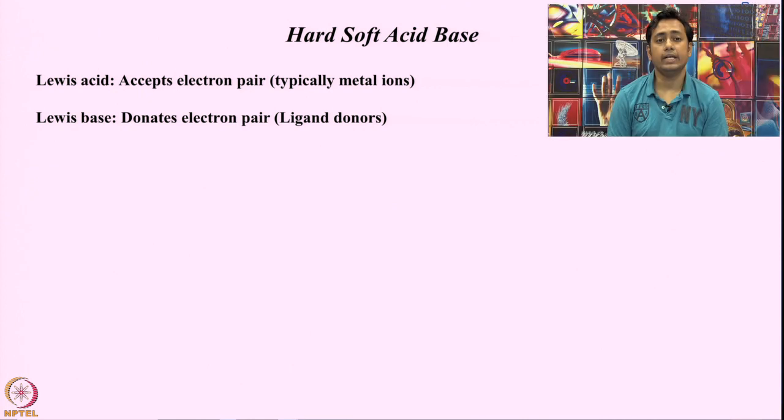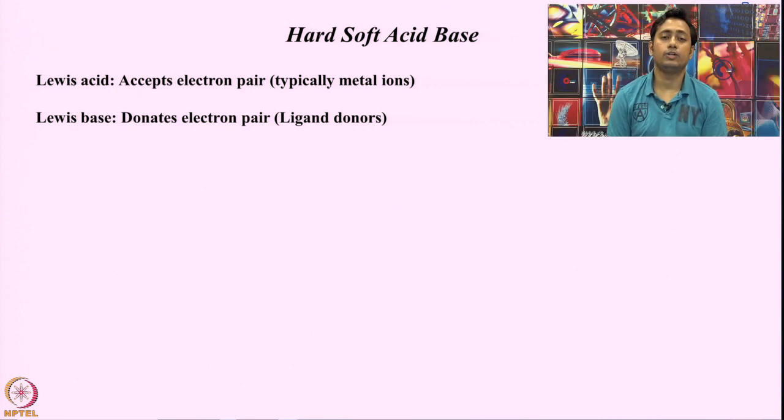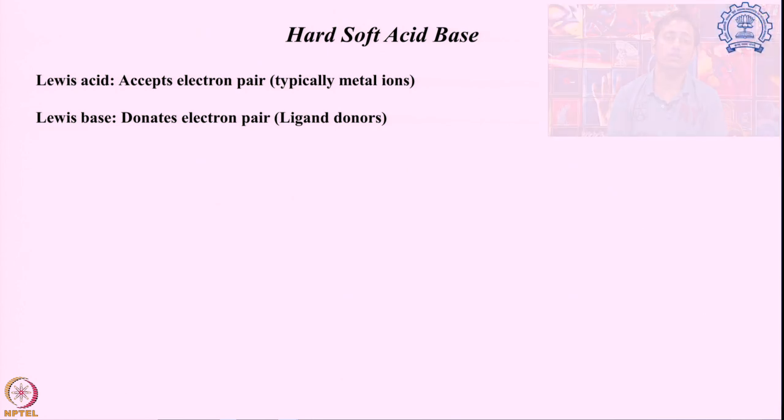If there is a system which can accept an electron pair, that is known as the Lewis acid — generally metal ions. And the entity which is supplying this electron pair is known as the Lewis base — generally ligand donors. So this is the definition with respect to Lewis acid-base theory: a system that can accept an electron pair is an acid, and a system which can donate an electron pair is the base.